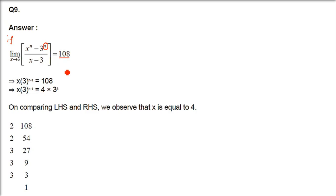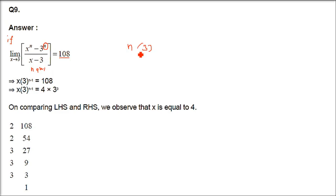So 108 — let us factorize this so that we can equate with the solution from evaluating the left hand side. We know the formula gives n times a to the power n minus 1. Here n is n and a is 3, so we get n times 3 to the power n minus 1. This equals 108.